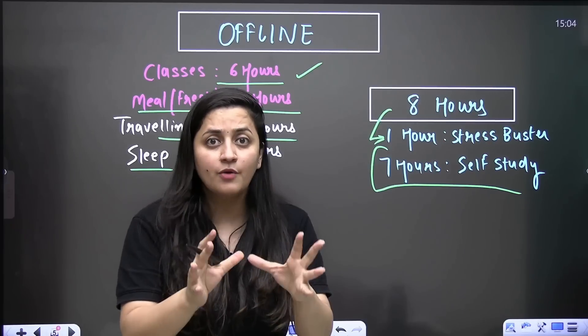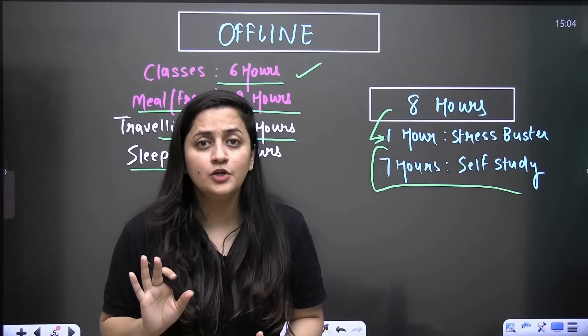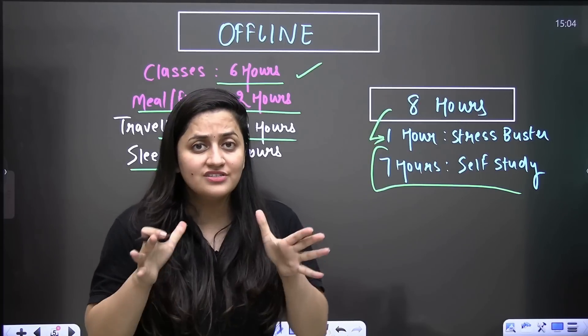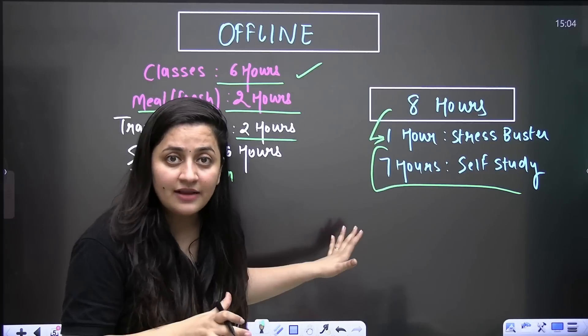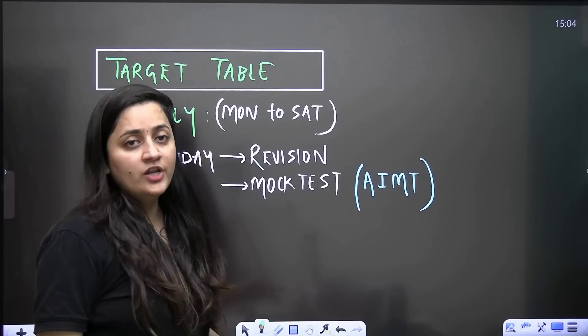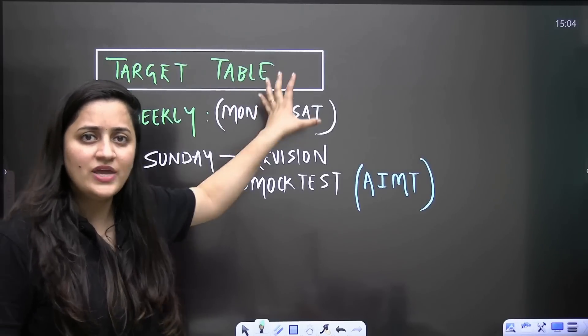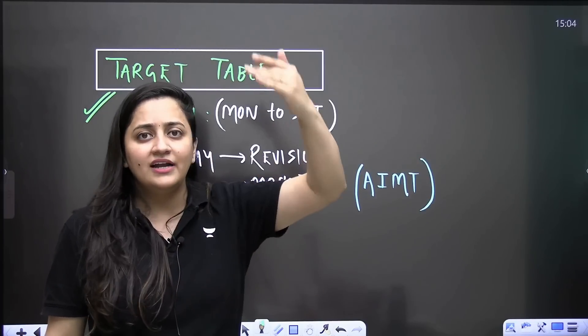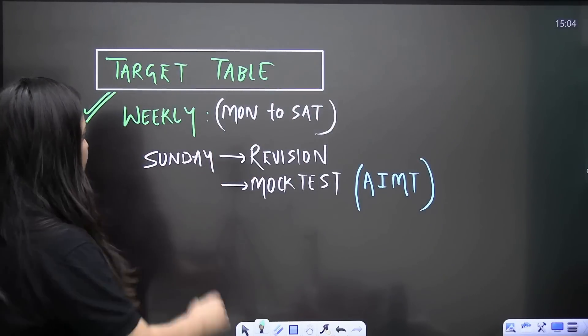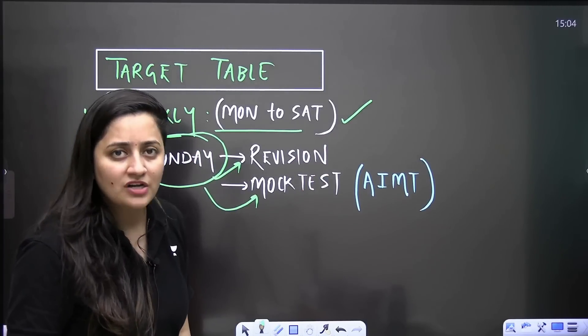Follow the PYQ, read it from NCERT, attend the classes, make the notes and just follow the cycle for the next seven to eight months. And trust me, no one can stop you to crack the NEET examination. So this is all about this detailed strategy and the timetable. If there is any other doubt, just let me know in the comment section. Trust me, I'll make video on that and I will discuss that with you. As I said, you need to keep a target table that this week, out of that 10 chapters of physics, this is what I'm going to cover in this week. Target table should be there.